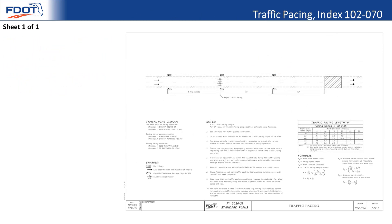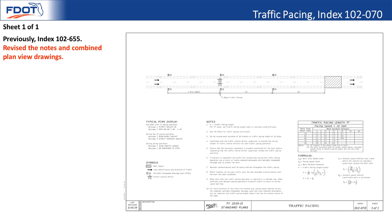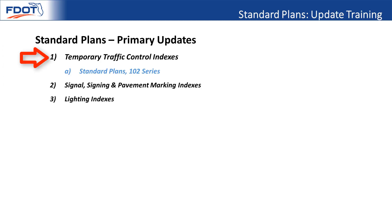Index 102-070, traffic pacing, was previously index 102-655. Many changes occurred: the notes have been revised, the plan views from sheets one and three have been combined, law enforcement instructions were removed, and the design information was removed. There is a section in the FDM dedicated to design calculations required for traffic pacing — that's FDM 242.